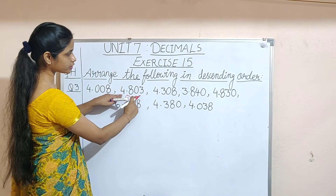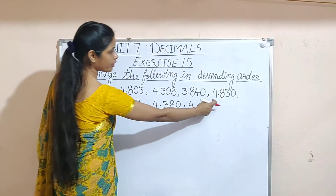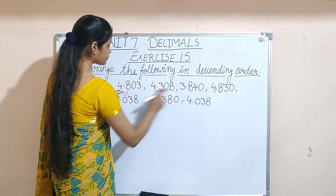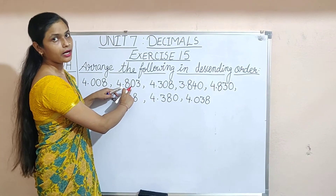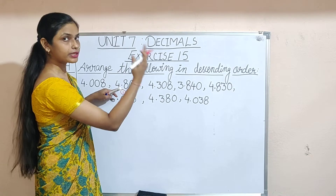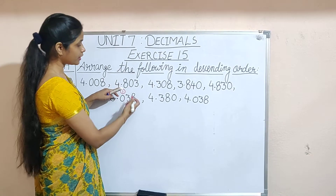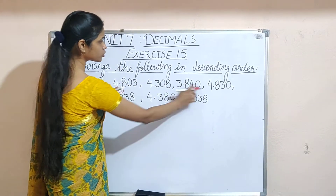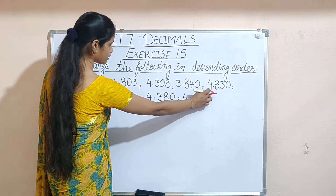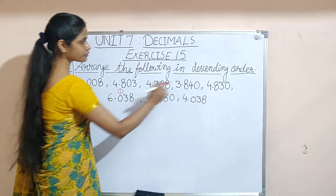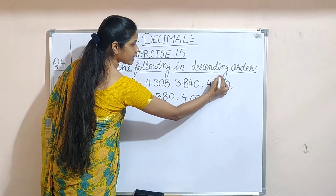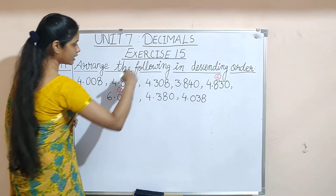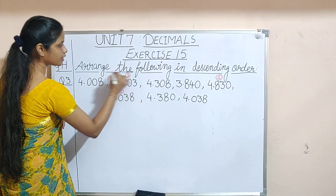Now we see that 4.8 appears twice — both numbers share the same first decimal place of 8. So we compare the next decimal place: one has 0 and the other has 3. Since 3 is bigger than 0, that number is the bigger one. So after first place, 4.830 will be the second number and 4.803 will be the third number.